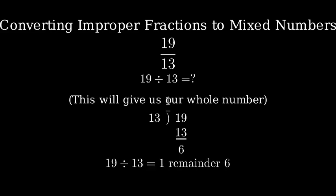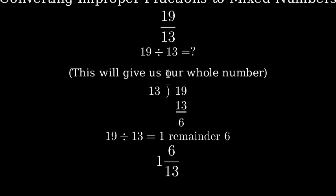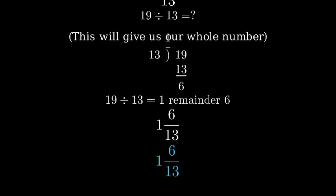Now we can write this as a mixed number. The 1 becomes our whole number. The remainder, 6, becomes the numerator of our fraction. And the original denominator, 13, stays as the denominator.